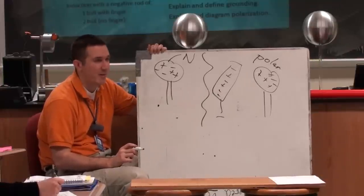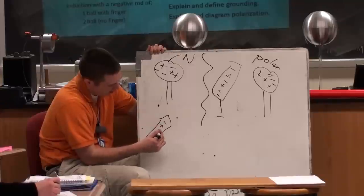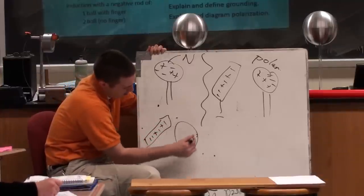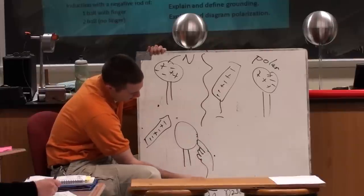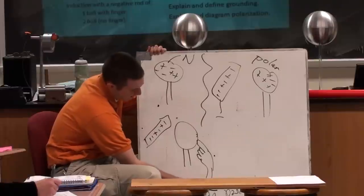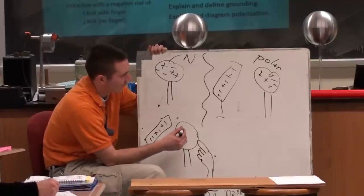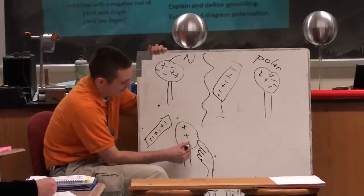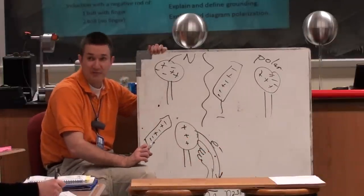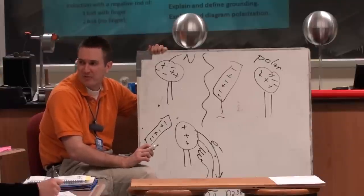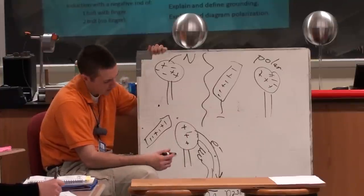So once it's polarized, the next step if the negative thing is still there, there's the ball and in comes, no it's not a foot, in comes the finger. Well, the electrons that were trying to get as far away, well they get far away. Now they probably won't all leave, but most of them will leave and they go down to the ground.